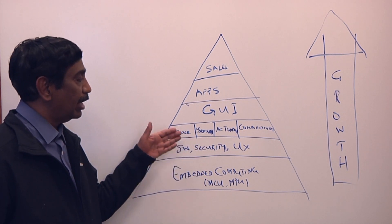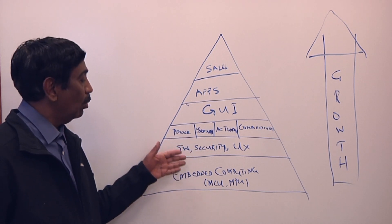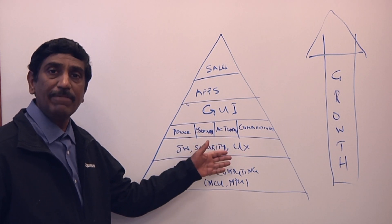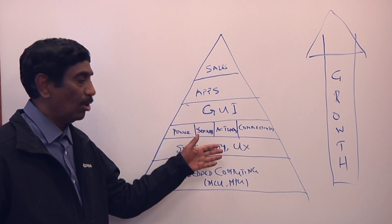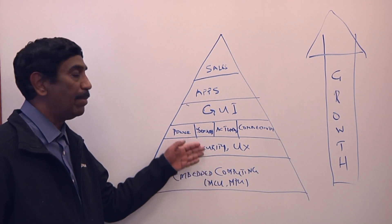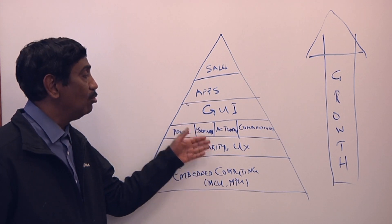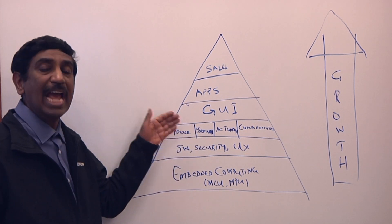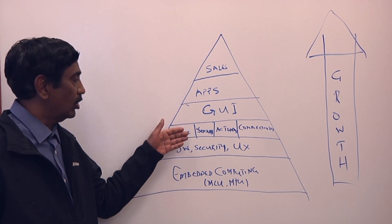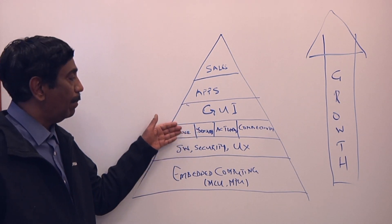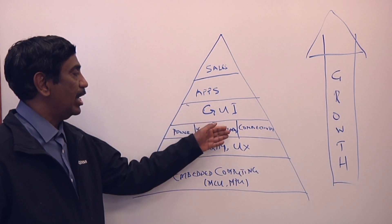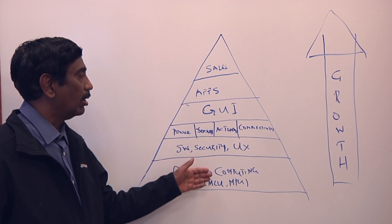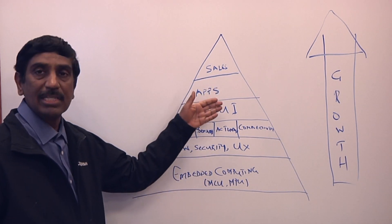Above it, of course, the important layers which people often underestimate, which is the role of software, security and the user experience. Those three factors play a very vital role in enabling the ease of use of embedded computing in a user environment. On top of it, one can think about the analog mixed signal capabilities that one builds on top, in particular power, sensors, actuation and connectivity.